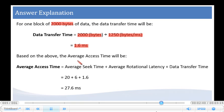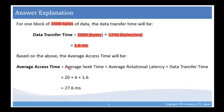Based on the above calculations, the average access time is the average seek time plus the average rotational latency plus the data transfer time. This is 20 plus 6 plus 1.6, which equals 27.6 milliseconds.